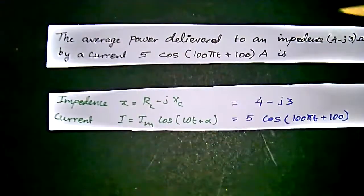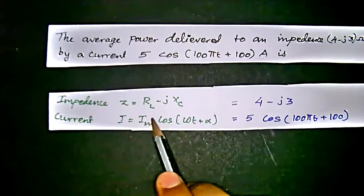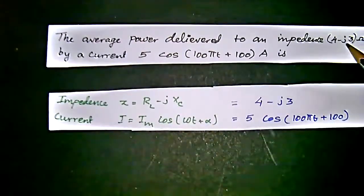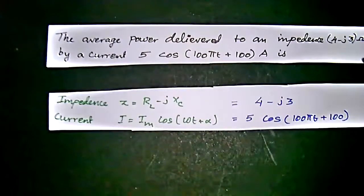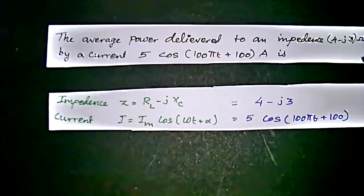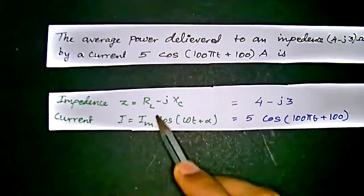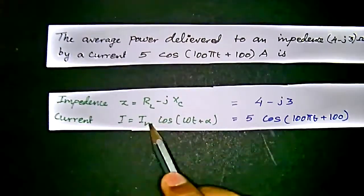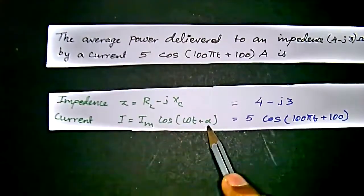From this we already know Zt equal to R minus j Xc, because of this minus value giving us the idea that we are using the resistance and capacitance in serial manner. So we will take it as R minus j Xc, and I equal to Im cos ωt plus alpha.